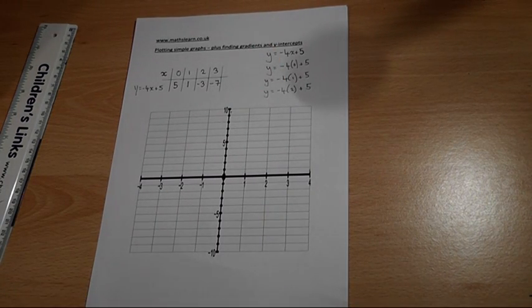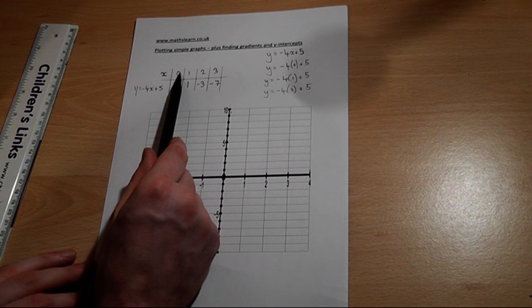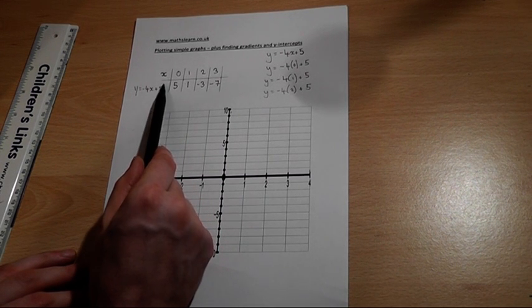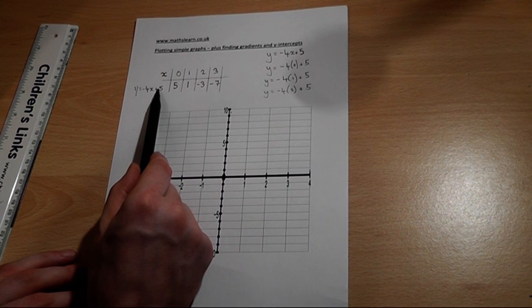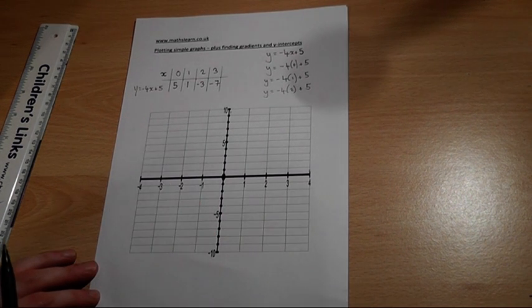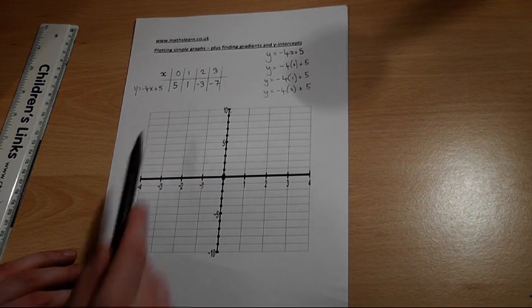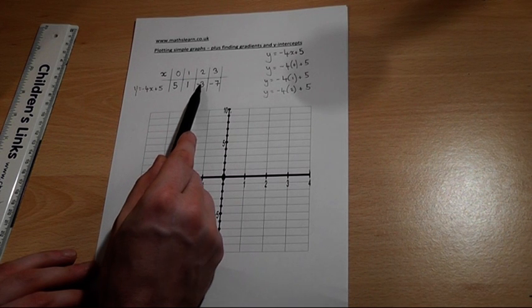Now, observations. When x is 0, y is 5. This number here in the equation always gives you the value of y when x is 0. Another observation: we go down by 4 each time. This comes from the minus 4 in the equation there.